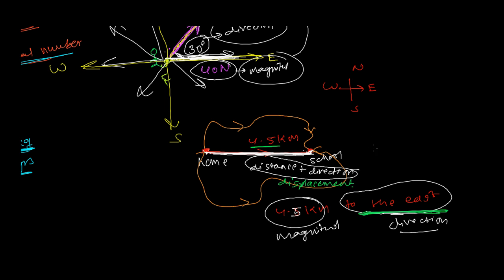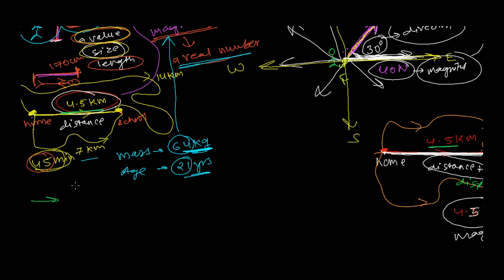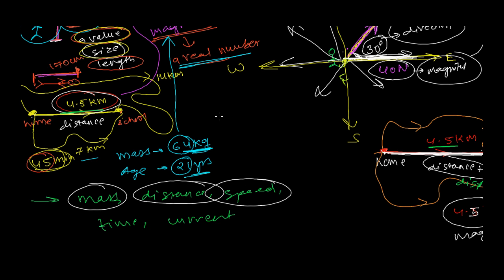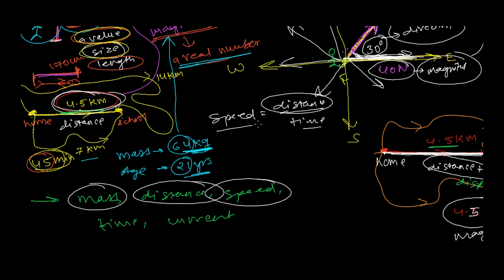Such quantities are called vector quantities. For scalar quantities, examples include mass, distance, and speed. Speed is actually distance over time — how much distance you're covering in how much time. I said 'distance,' not 'in which direction,' so speed is a scalar. Time is also scalar. And there's also current — these all are scalar quantities, just magnitudes without direction.